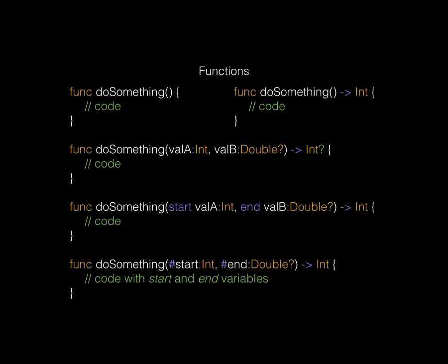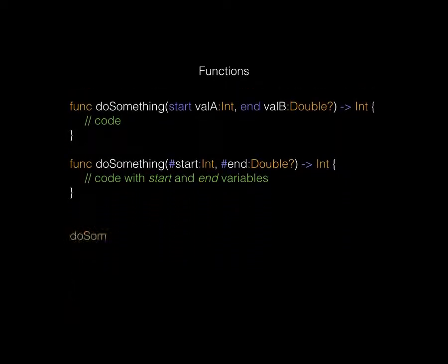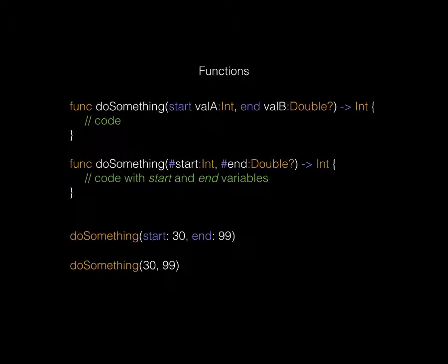There's another grammar as well: if you use a hash instead, it means it will automatically use the name of the variable as an actual label. Inside your method you'd have variables `start` and `end`, and externally it would also use `start` and `end` as labels. So as you can see when calling those functions, for both examples `start` and `end` are used as identifiers — in the first example 30 would be inside `valA` and 99 inside `valB`, and in the second they'd be contained in `start` and `end`.